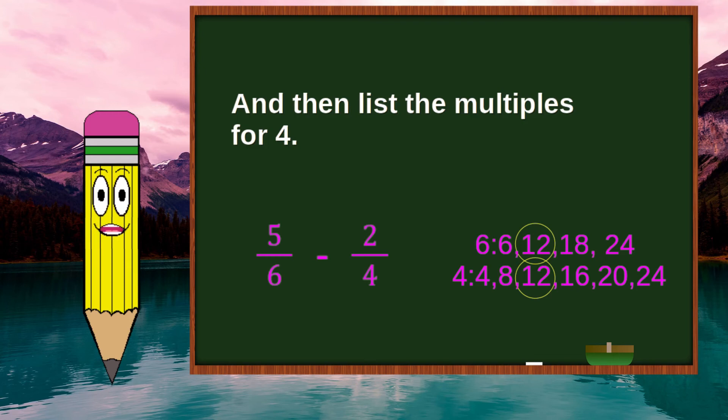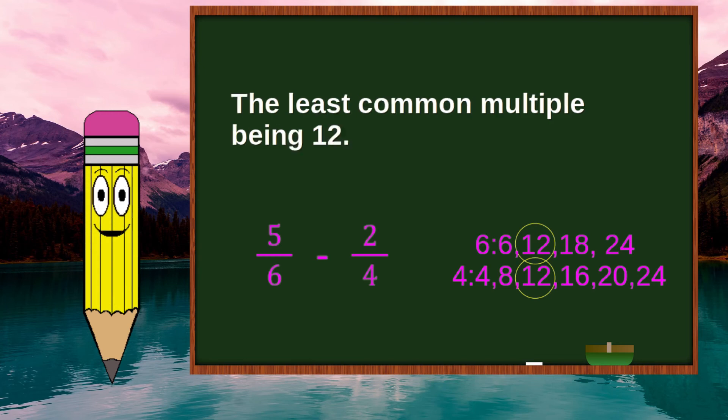And then list the multiples for 4: 4, 8, 12, 16, 20, 24. 12 is the common. The least common multiple being 12.